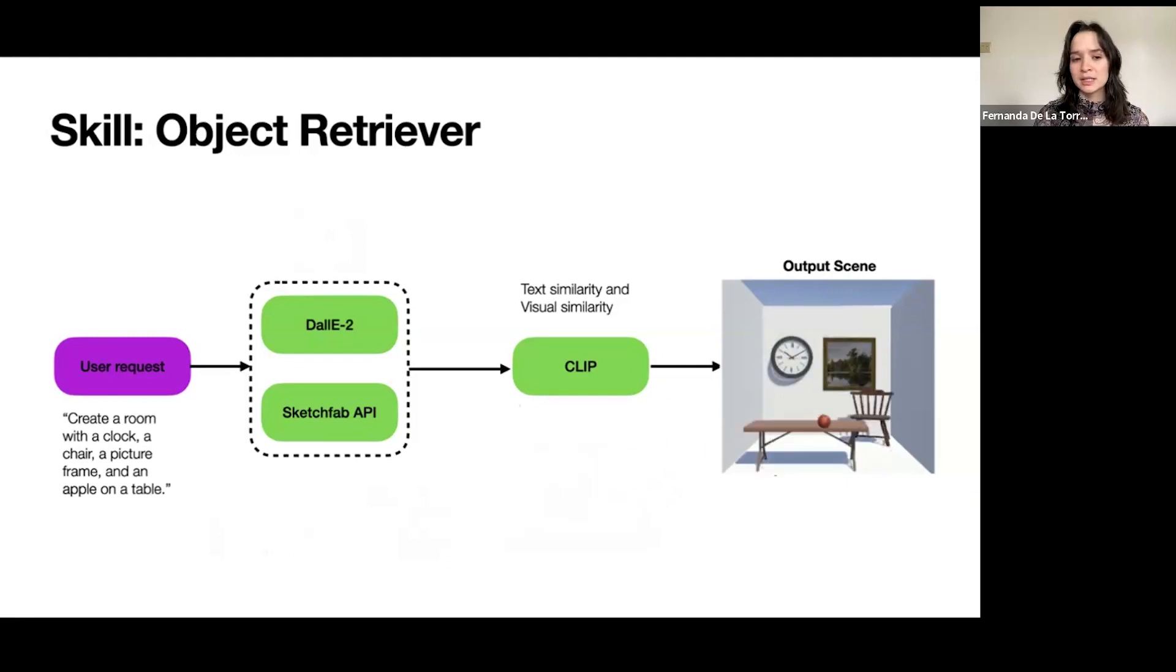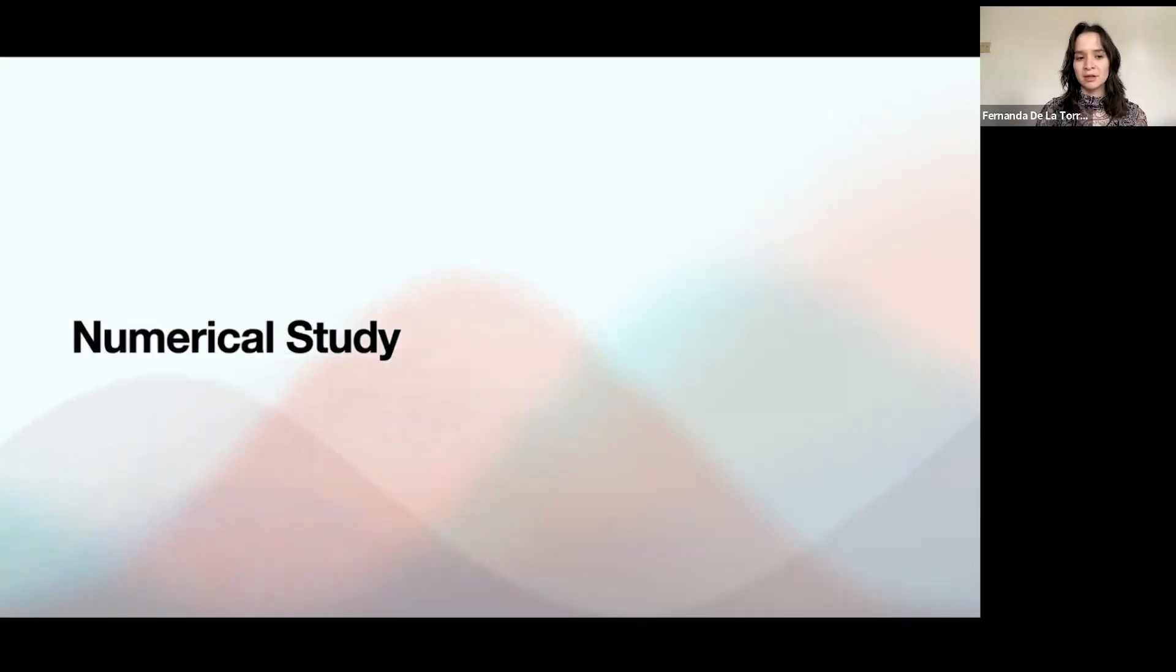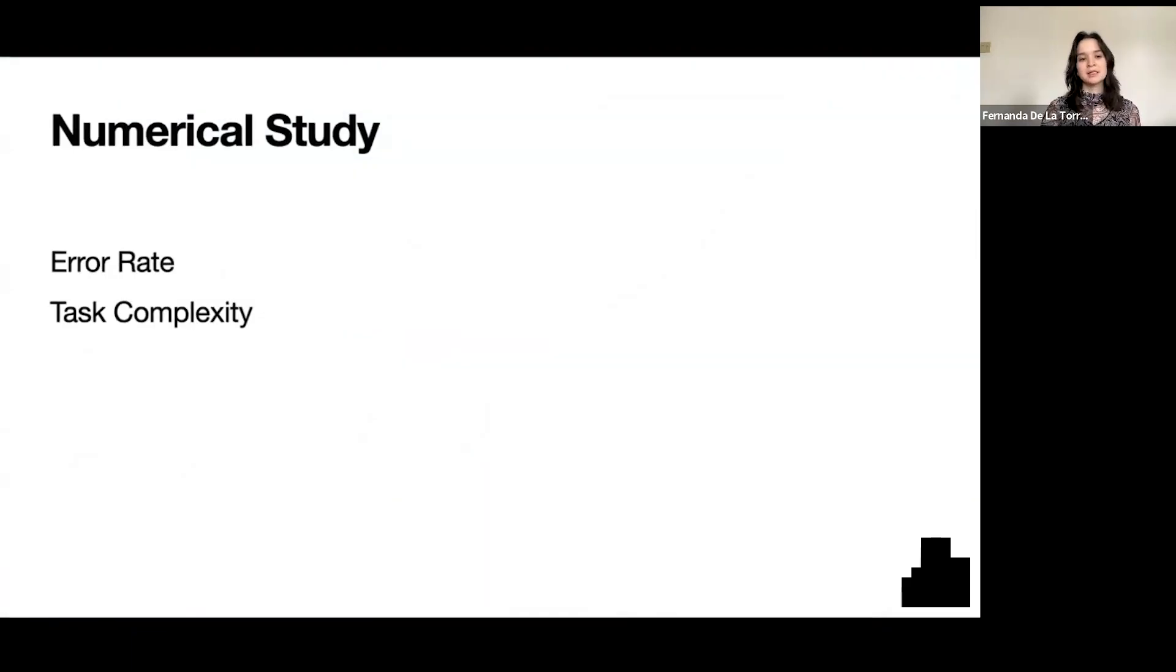Through other reasoning skills, LLMR is able to place objects in positional, intelligent ways. To test the efficacy of LLMR, we ran a numerical study. To do this, we measure error rate, task complexity, iterative improvement, and real-time.